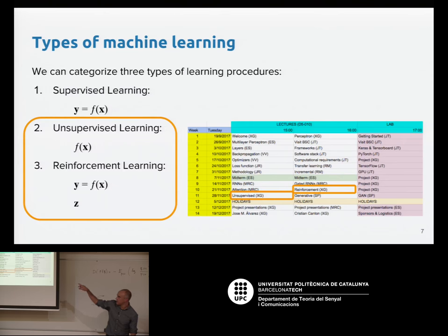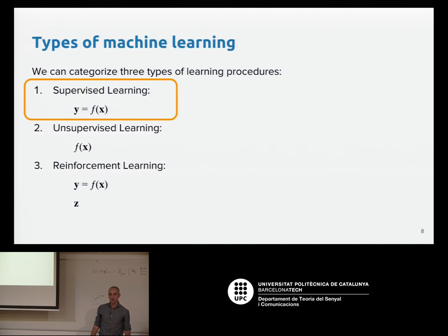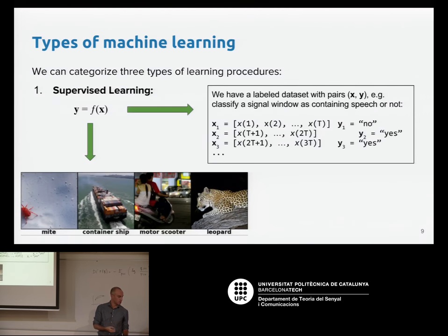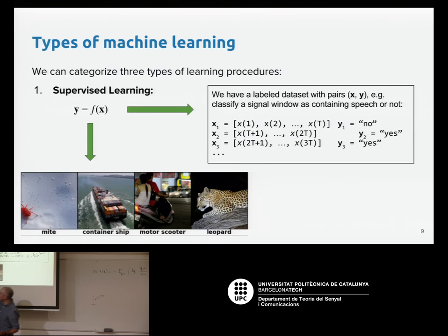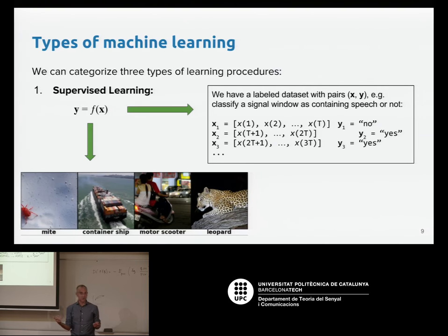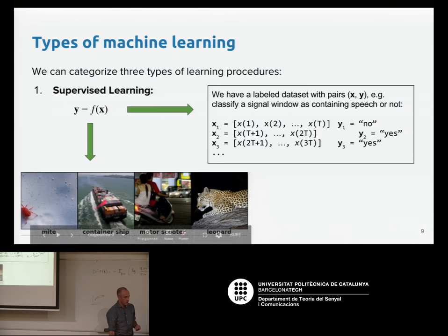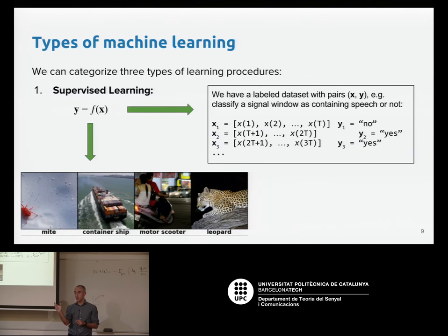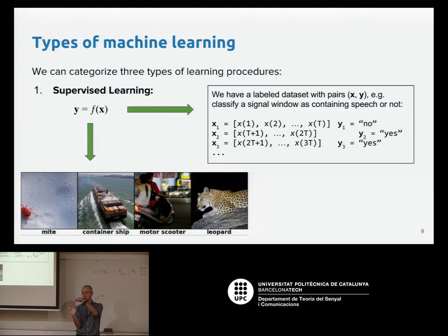Now we'll focus on supervised learning. We have input data and we have labels — for each input sample we have a label or a prediction we know we want to generate. Examples include image classification: you have an image and want to predict whether it's a mite, a container ship, a motor scooter, or a leopard — X is the image and Y is the label. Another example is audio: you set a window over an audio signal and want to predict if that window contains speech or not. If you have labels telling you whether there's speech in each window, you can train a model for that.